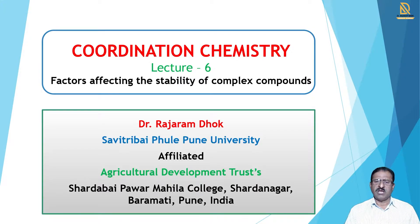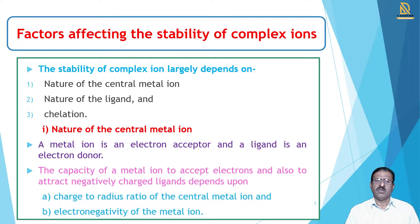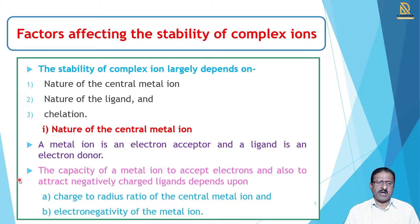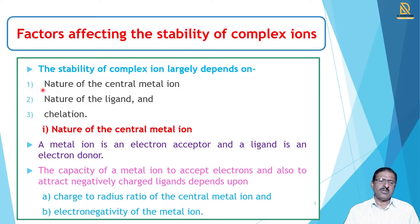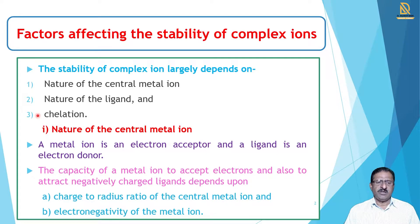Which are those factors and how do those factors affect? There are various factors which affect the stability of the complex compound. Mainly there are 3 factors, and these factors mainly determine the stability of the coordinate complexes. Those factors are: first, nature of central metal ions; second, nature of ligand; and third factor is chelation. Now we see in detail how these 3 factors affect, and for that purpose we take different examples.